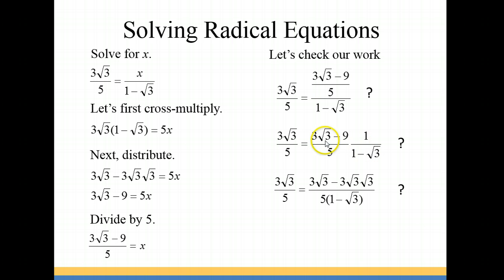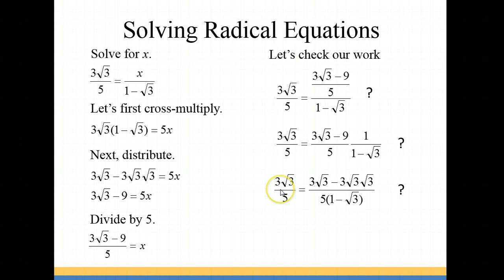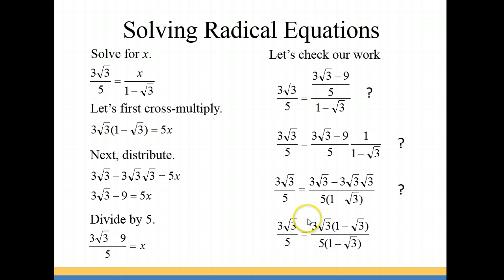With the 1 we still have 3√3 minus 9, but I manipulated it a little bit here. I rewrote it in this format because I saw in the denominator that I had (1 minus √3), and over here there's no subtraction or addition of terms. So I need to be able to factor out (1 minus √3). I rewrote it this way so I can do that — I factored out the 3√3.